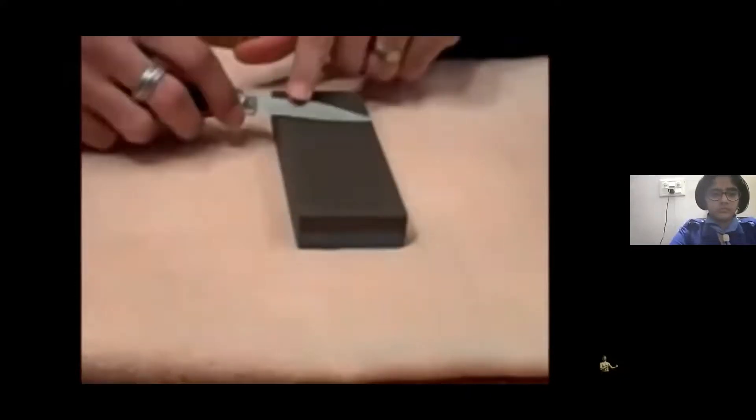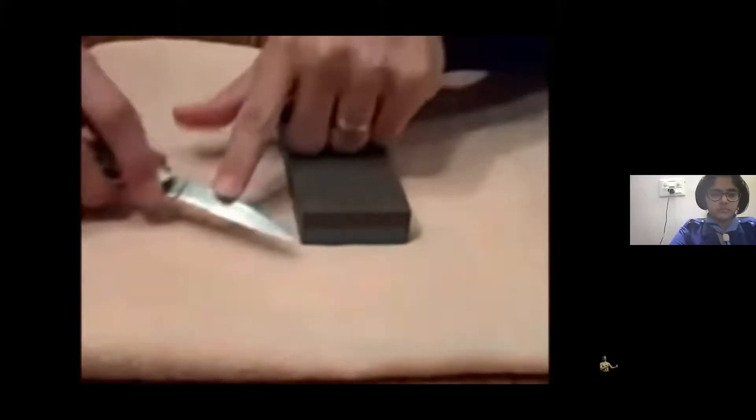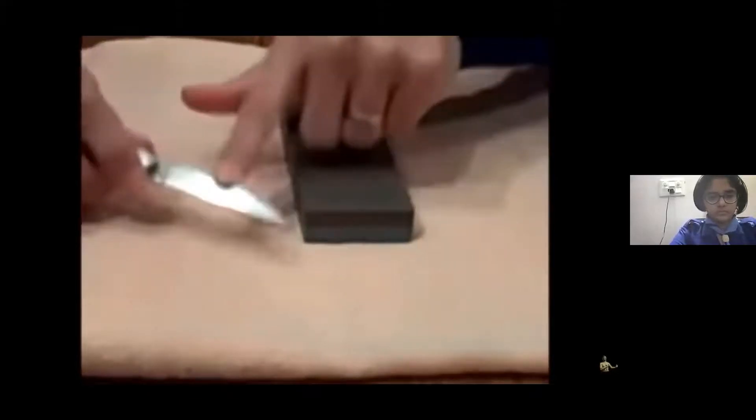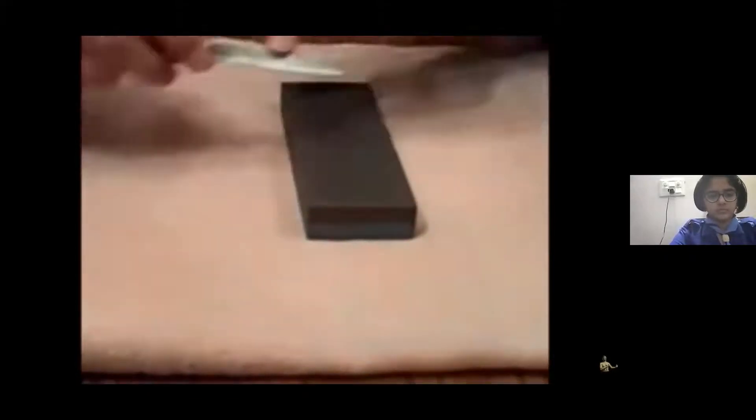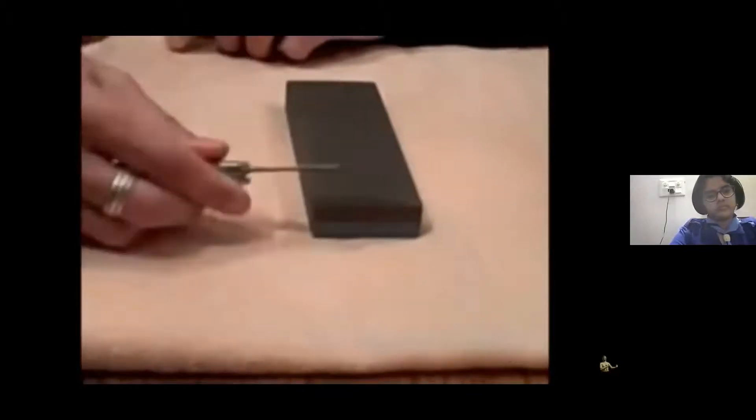You know you're doing it right because it sounds nice and clean when you're sharpening. If it's something like that, you know you're not doing it right. So do this about six times. Then you're going to flip it around and do it the other way—sharpen the other side of the blade.